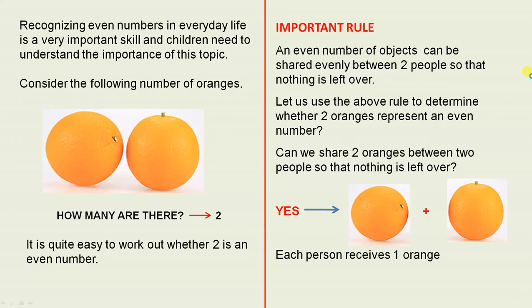Consider the following number of oranges. How many are there? It's clear to see that there are two oranges. It is quite easy to work out whether two is an even number.